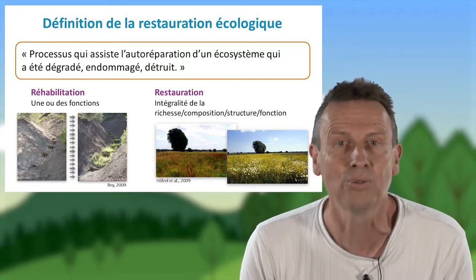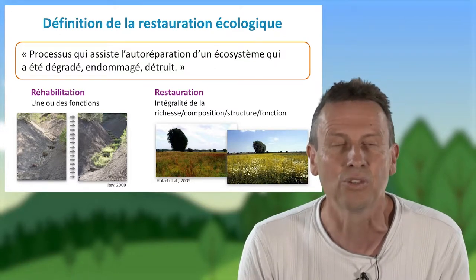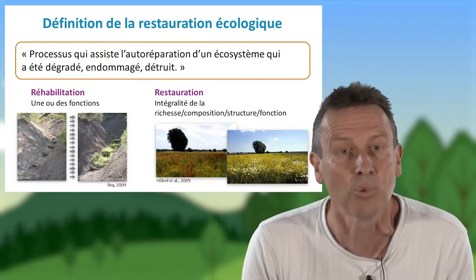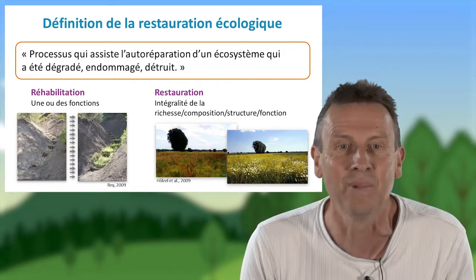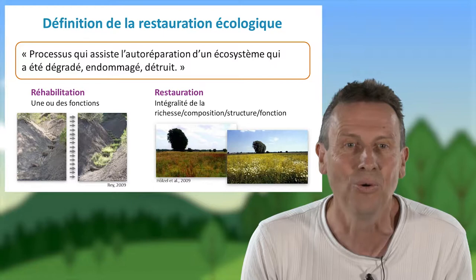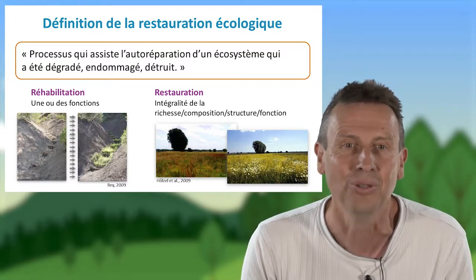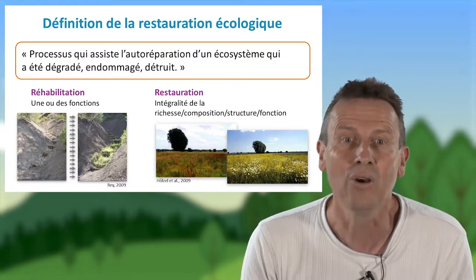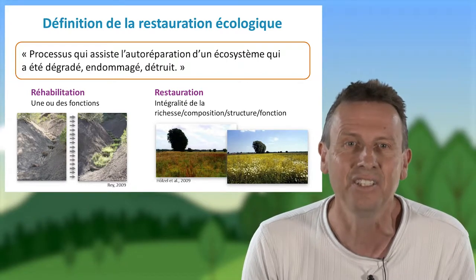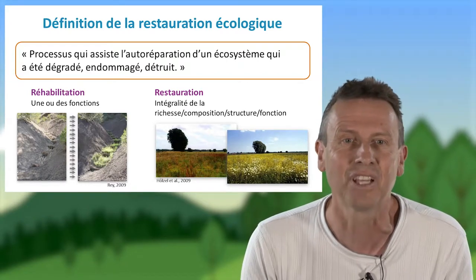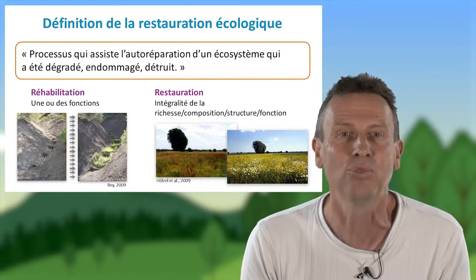Dans ce domaine de la restauration écologique, on peut distinguer deux sous-domaines. La réhabilitation, qui consiste à intervenir pour restaurer une ou des fonctions de l'écosystème — par exemple, mettre en place des micro-aménagements pour retenir l'eau dans le cadre d'érosions torrentielles. Ou alors la restauration sensu stricto, qui consiste à restaurer l'intégralité d'un écosystème à travers sa richesse en espèces, sa composition, sa structure, mais aussi ses fonctions.